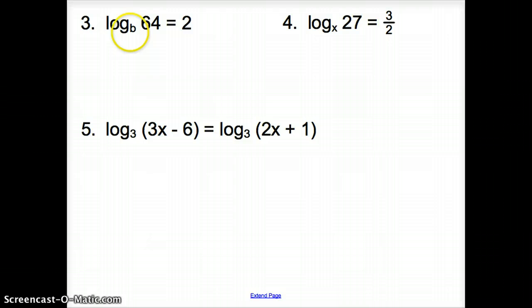Try a couple more here with number 3. Same situation. We have a log here, not a log here. So when that happens, we have to swing the b over and bump the 2 up. We bring down the 64. That equals b squared. How do you undo that square? You have to square root. Now we're square rooting both sides. So it's going to be 8 equals b.